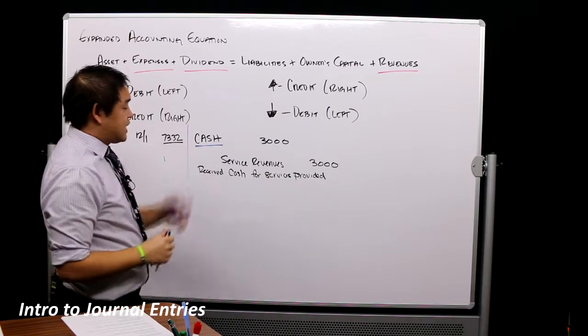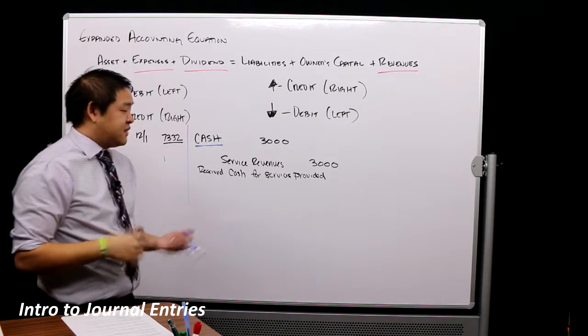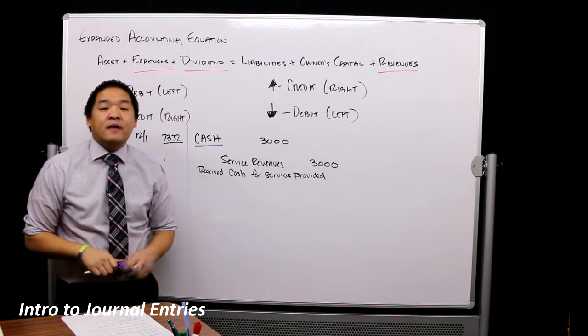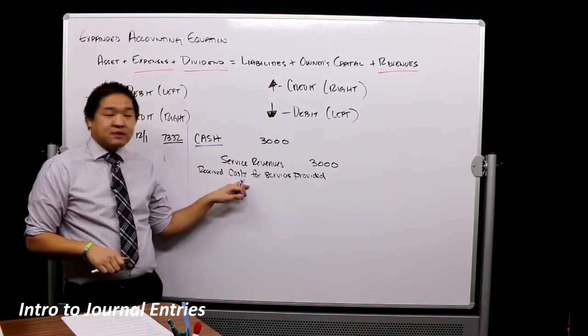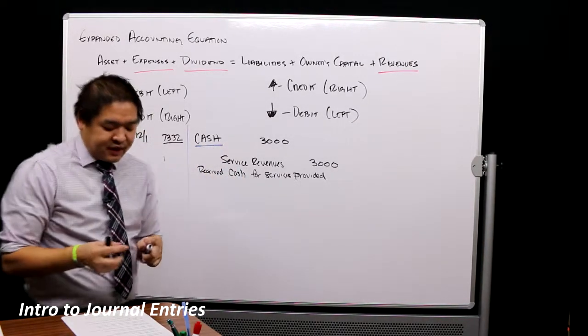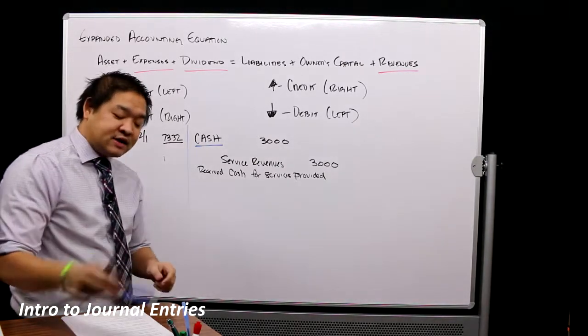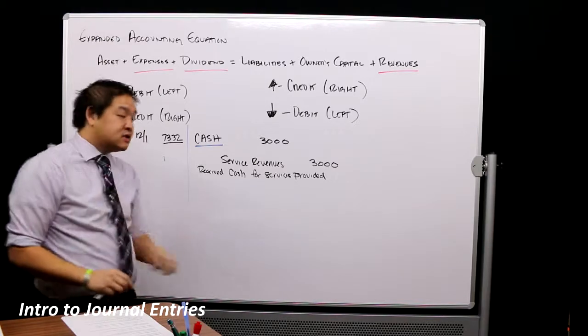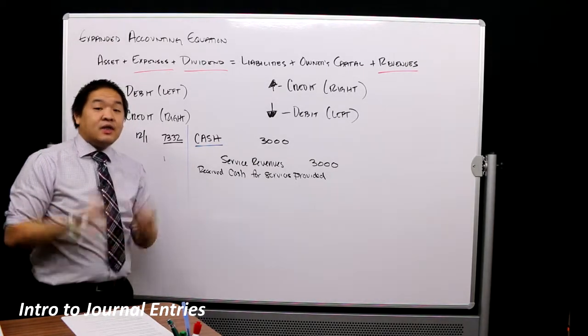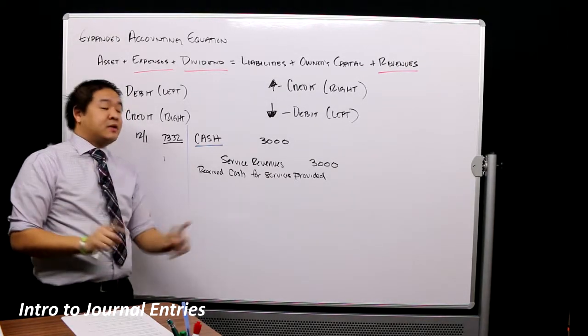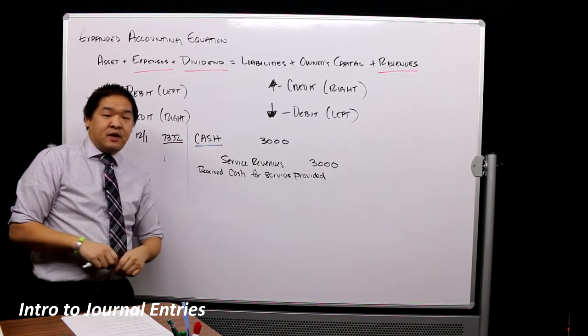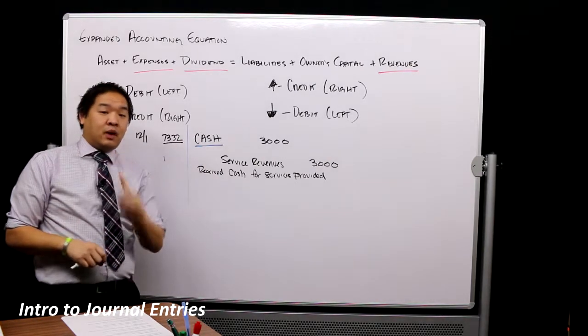Received cash for services provided. Oh, okay, so it looks like I received $3,000 and I provided $3,000 services. So we try to make this as easy as possible. This summarizes what that is. Now, a couple of things about journal entries. First of all, a journal entry does not exclusively have one debit and exclusively has one credit. There will always be a debiting credit. There should always be a debiting credit, but they will never be exclusively one-on-one.